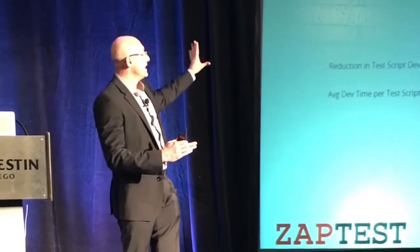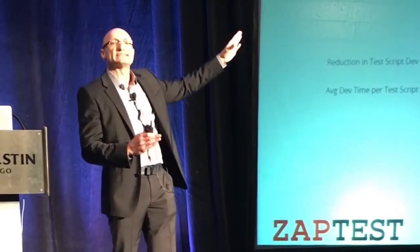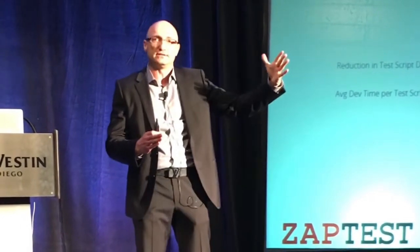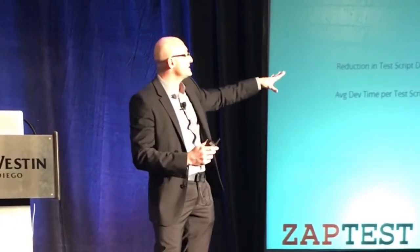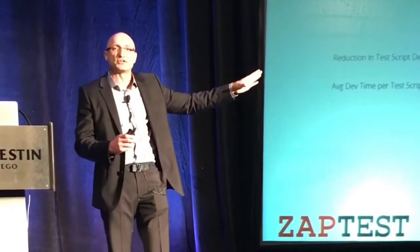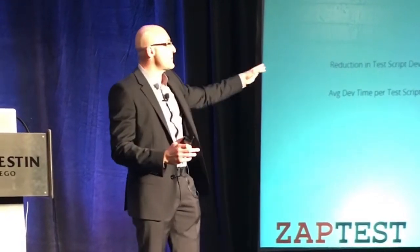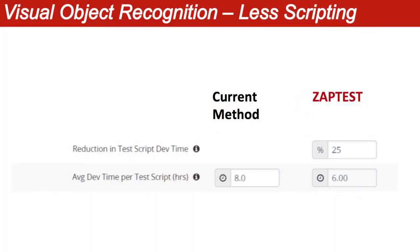We achieve a reduction because we have less scripting — 25% reduction — that allows you to create scripts faster. If we take a number: the average test procedure, if you build all the logic from beginning to end so you can plug it into any procedural architecture, fairly takes 8 hours. So if it's automatically a 25% reduction, that's 6 hours. That's the first parameter.